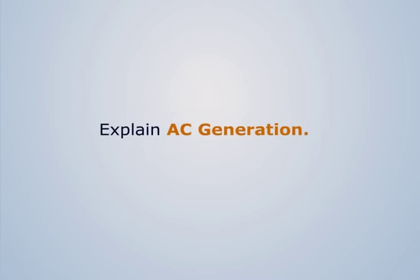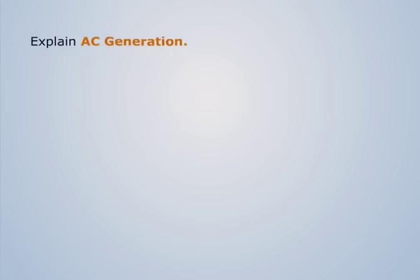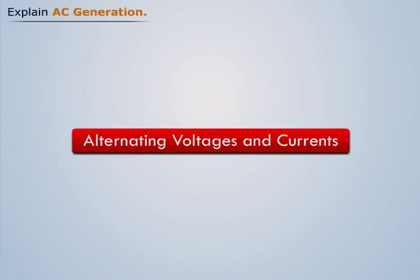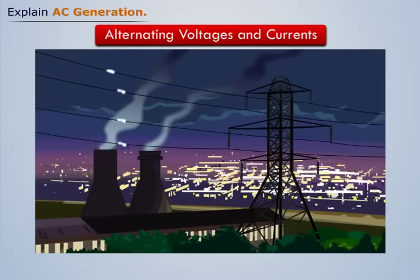Explain AC generation. Throughout our daily lives, majority of us depend on alternating voltages and currents. Most of the lights, electronic devices and electrical appliances use alternating current.